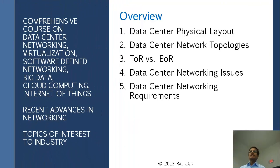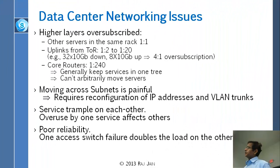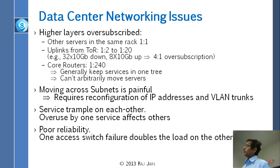Data center networking issues. The first is that over-subscription is an issue. In the same rack there is no over-subscription generally, because you just get 1 gigabit in and 1 gigabit out to the switch, but from the switch onwards you have 1-to-2 to 1-to-20 over-subscription.